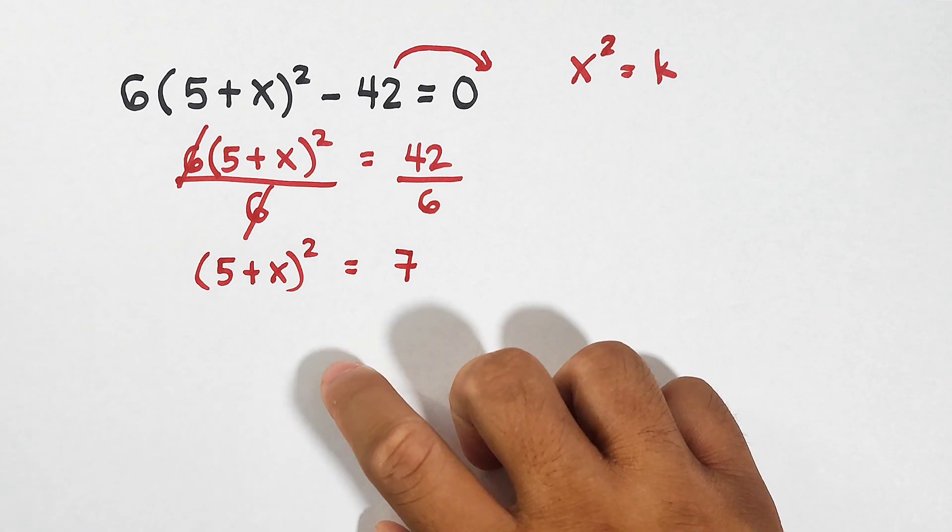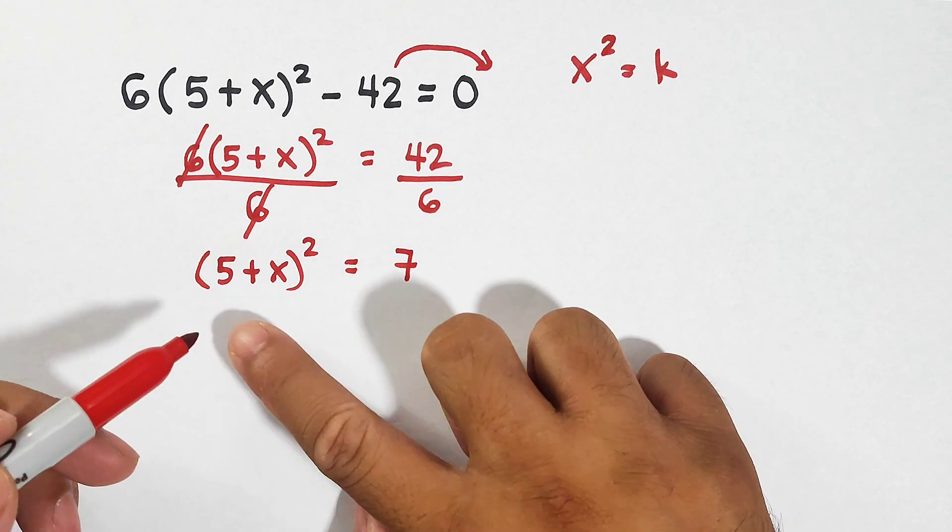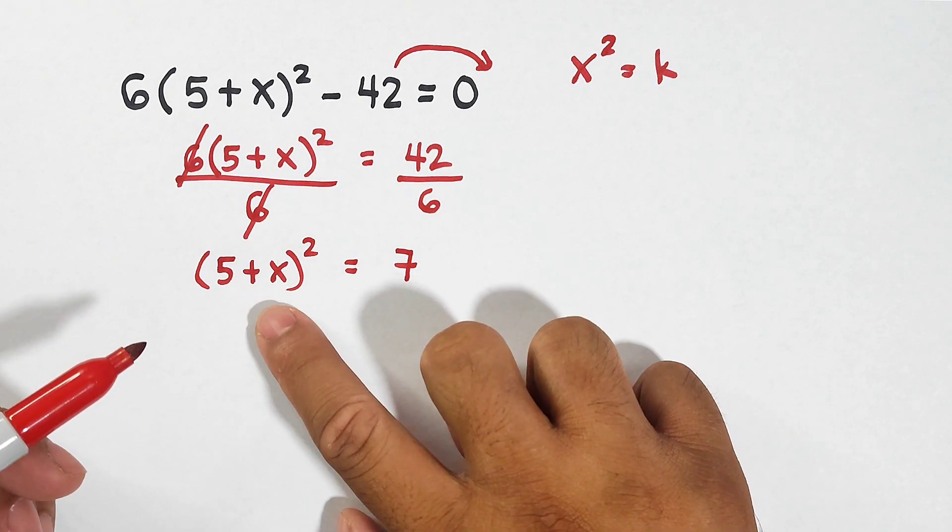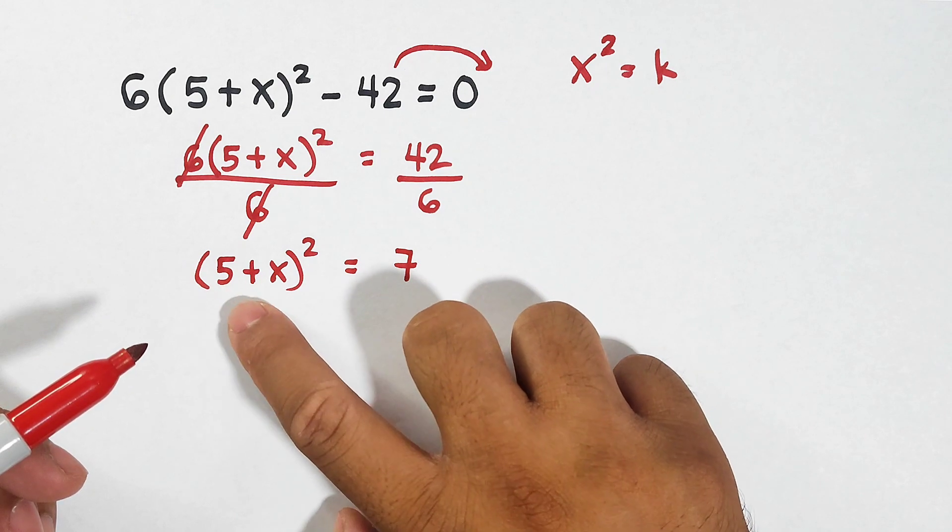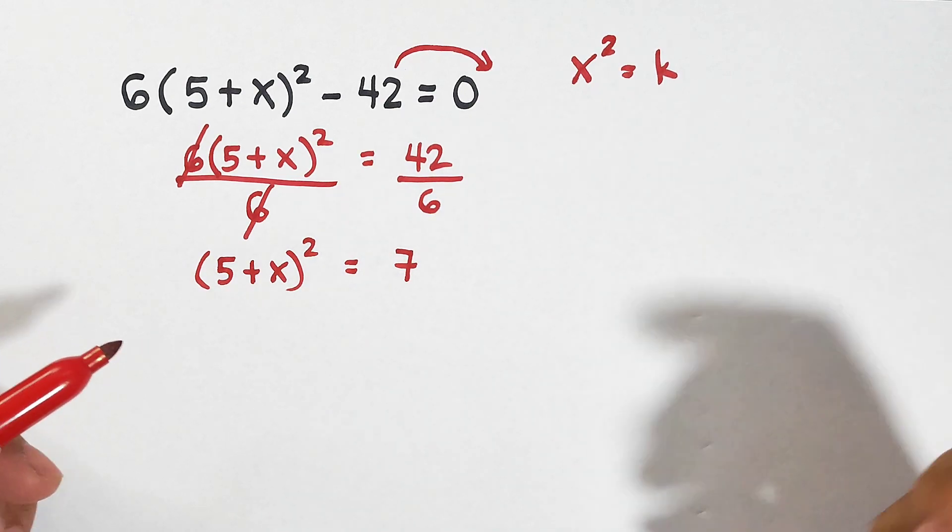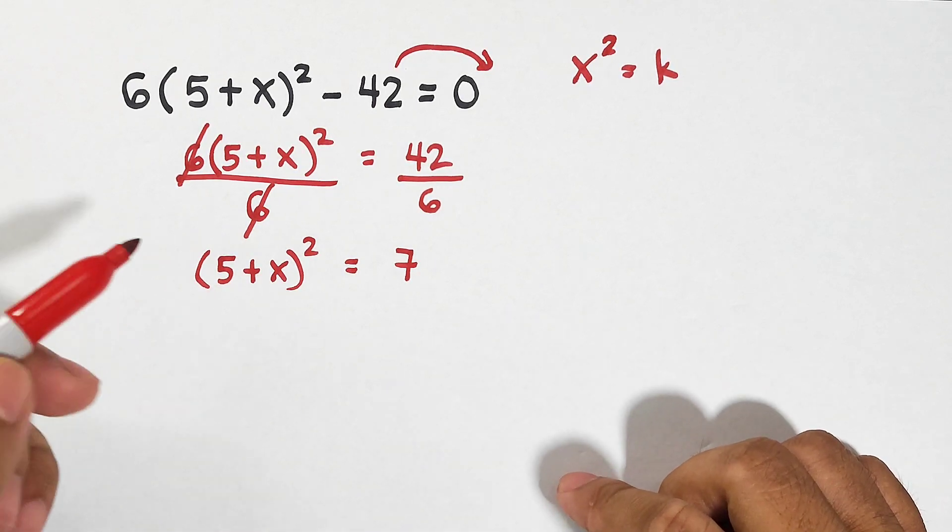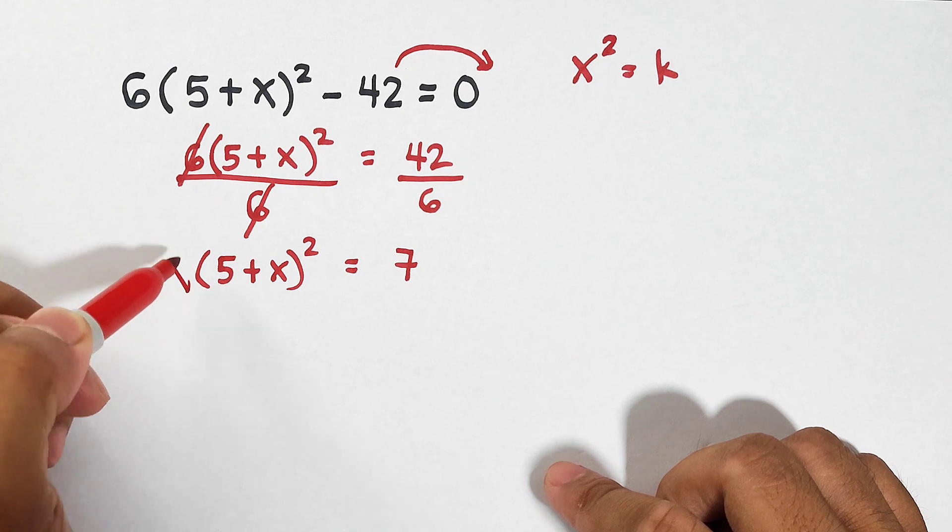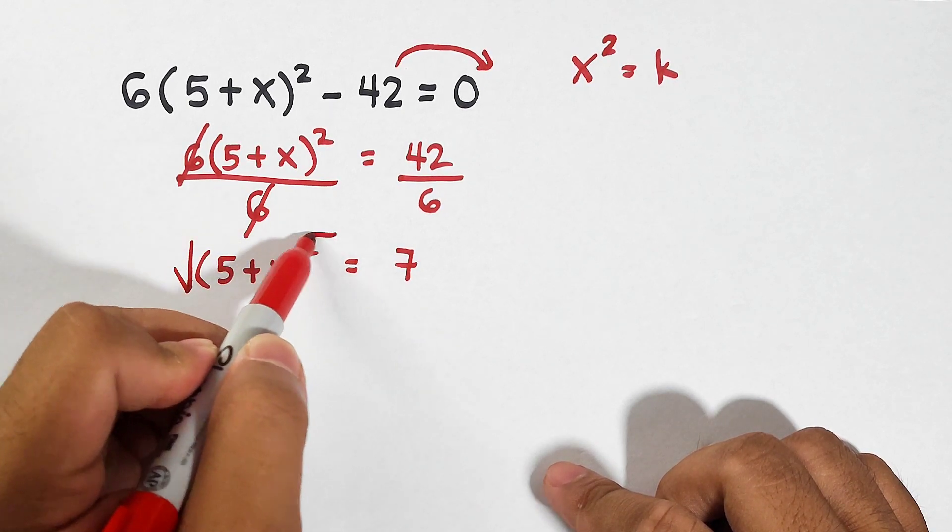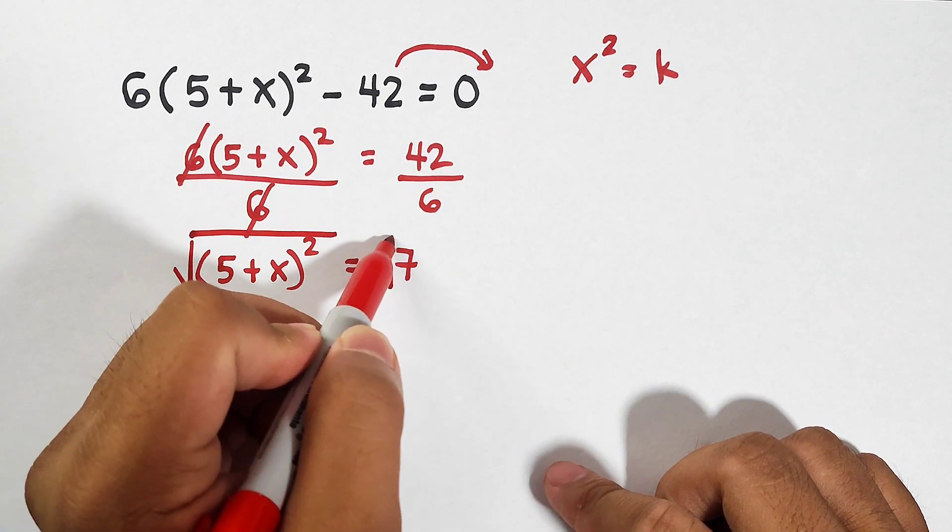Now, in your case, maybe you would think that we need to expand this one. We will try to multiply 5 plus x times 5 plus x. But this can be solved using extracting the square roots. So, we will get the square roots of both sides of the equation.